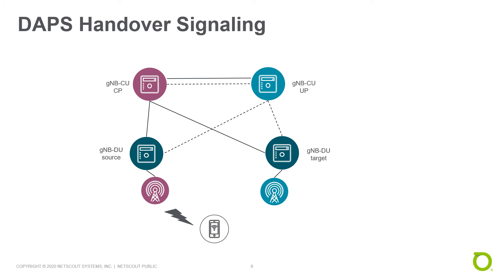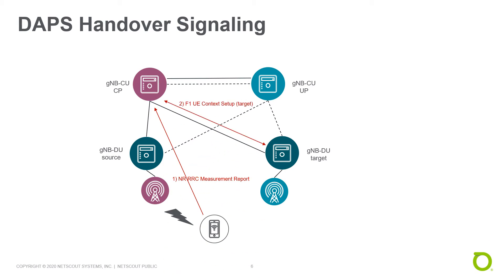What signaling procedures can we see in the virtual or Open RAN related to the DAPS handover? The handover is triggered when the mobile sends a New Radio RRC measurement report indicating that a better neighbor cell was found. When the central unit for the control plane of the gNB receives this measurement report, it starts an F1-UE context setup towards the target distributed unit. In addition, an E1-BEARR context is established between the CU-CP and the CU-UP. This is a second and additional E1-BEARR context. If you look into the BEARR context setup request message, you will see an information element indicating that a DAPS request configuration is required.